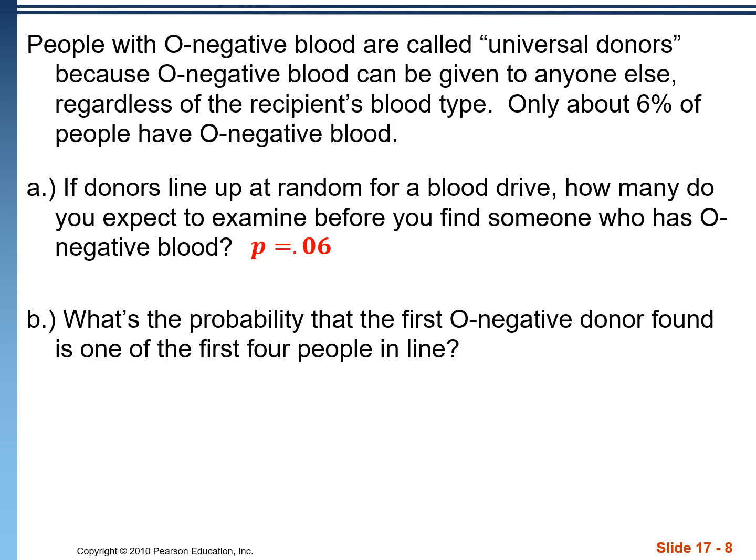The probability of success is 0.06. Since it's geometric, we can find the expected wait time by one over that probability of success. And we get an average number of people in line of 16.67.